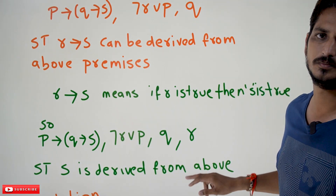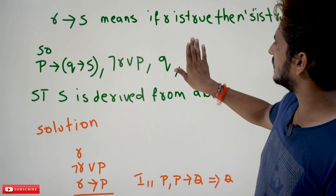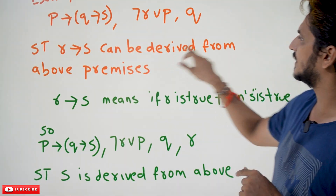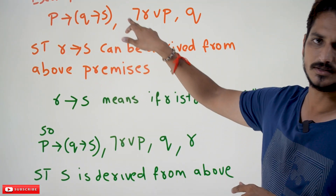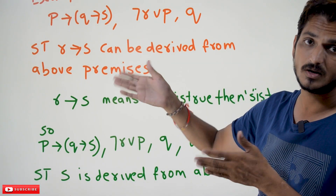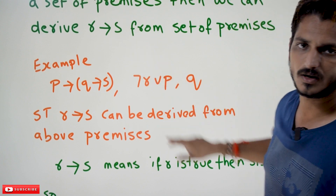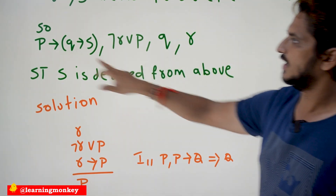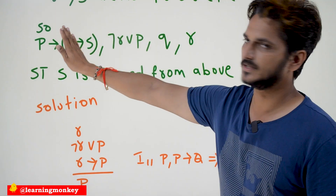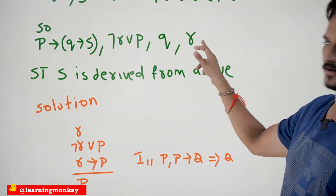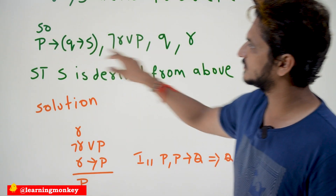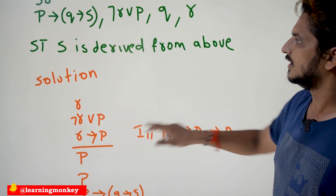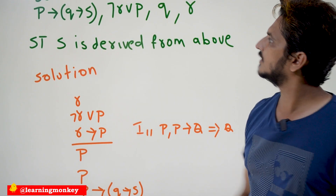Sometimes they are going to ask you questions where the output is based on an implies. In that situation, you can take out the R value, add it to the premises, and solve for S. The question is: given a set of premises, show that R implies S can be derived from the above premises. We are changing this using the conditional proof rule. We are going to change the question so that from the given premises plus R added, we derive S.